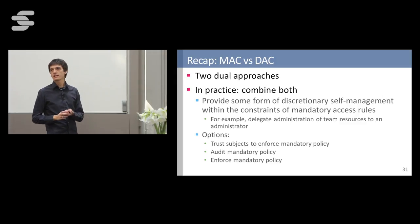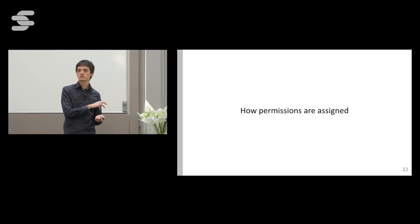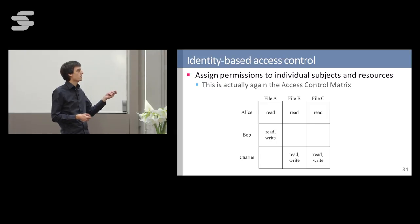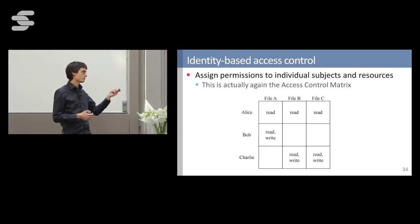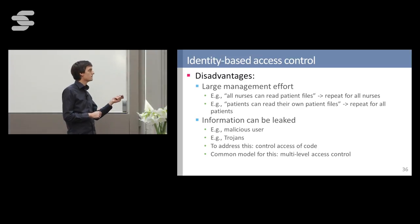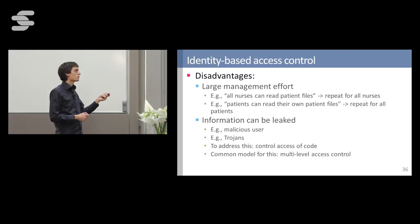Another set of access control models focuses on how permissions are assigned. The first basic model is identity-based access control, where you assign a permission to a specific resource and specific subject — essentially just filling in the blanks in the access control matrix. Clearly, this is not a very scalable management model: if you have many subjects and many resources, you will have a lot of management overhead. Additionally, information can be leaked — for example, by a malicious user who reads data and then you have no control over what they do with it. The same holds for untrusted code running in the name of a certain user.